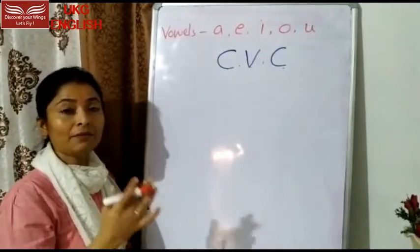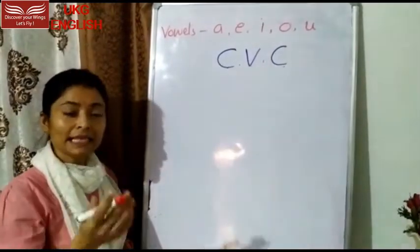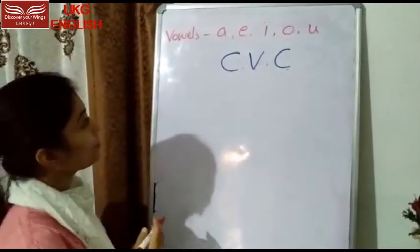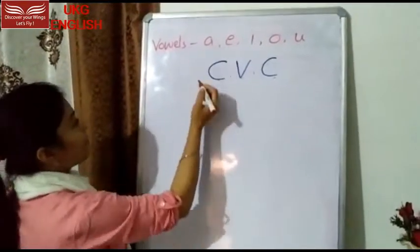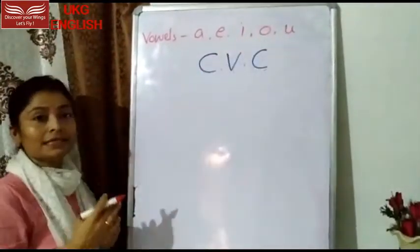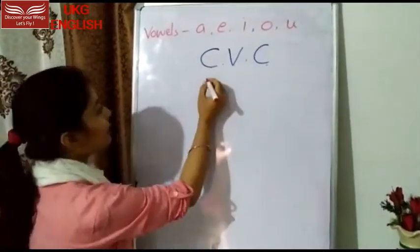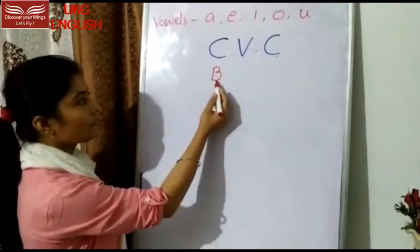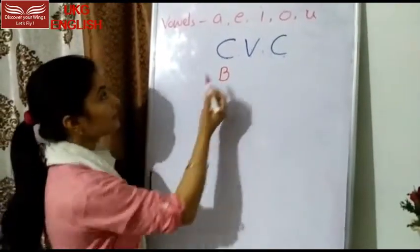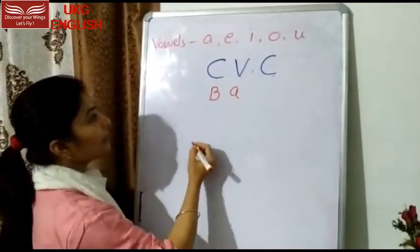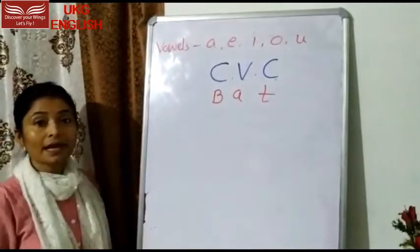With the help of CVC you can make many words. So I will tell you how to make a CVC word. I will take B — consonant, A — vowel, and T — consonant. So the word that is formed is: BAT. Which word is formed? BAT.